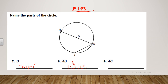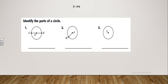What about this one? It's line AG — from A to G — and this line crosses the center, so of course that will be the diameter. Okay guys, let's continue. Now I want you to open your booklet to page 194.